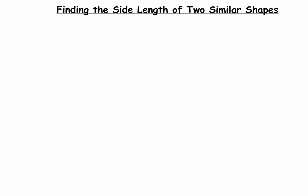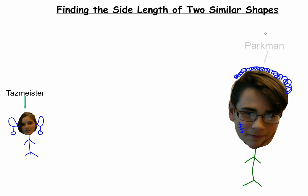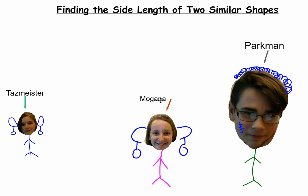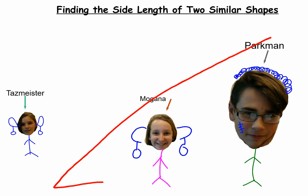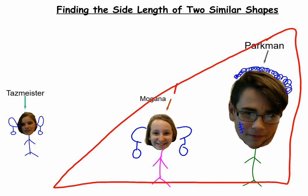We have some new characters for this video — some students who were kind enough to let their pictures be taken. The first student, I'll let you figure out who it is, she has some magical math powers, kind of like Cutie Pie. And that would be the Tasmeister. She has some really pretty earrings. The other students involved are Parkman and Morgana.